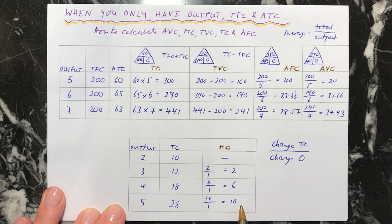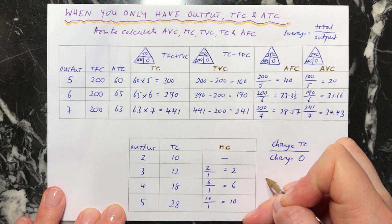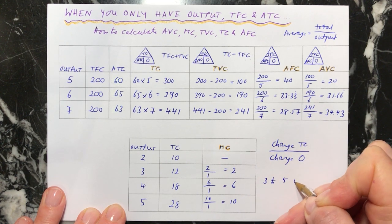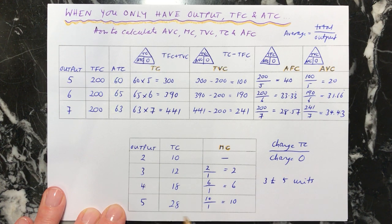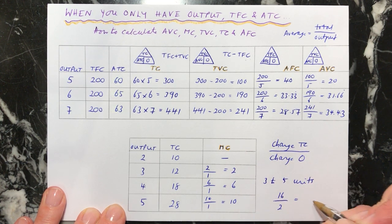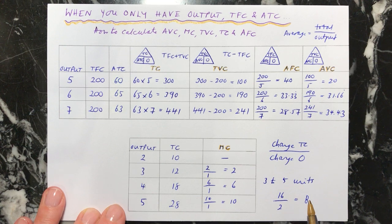If you wanted a slightly more complicated one, imagine we go from 3 to 5 units. Our change in total cost is from 12 to 28, so that's 16, divided by the change in output of 2, equals 8. So 8 is the marginal cost per unit of going from 3 to 5 units. This is how you can work out all five of these costs when you are only given a small amount of information at the beginning.